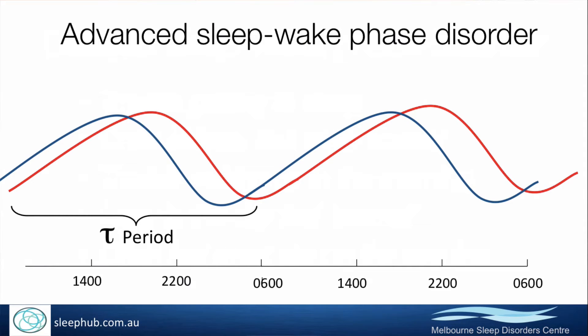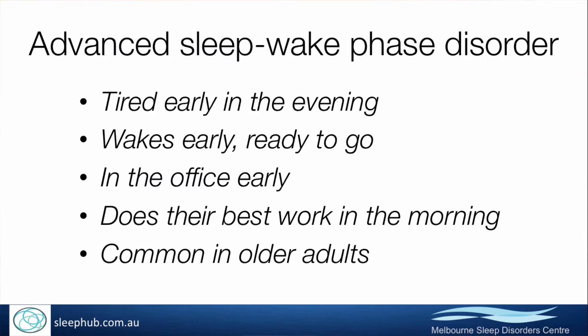The other phase disorder is advanced sleep-wake phase disorder — the opposite, where the body clock is earlier than the desired time. It's much less common in younger adults but more common in older people, particularly beyond retirement age, where people find they're falling asleep at 8:30 or 9pm. Getting around six hours of sleep, they then wake around 3am and become distressed about being awake in the dark. You'll know people in the office with a mild version — they're always in early, first thing in the morning, ready to go.